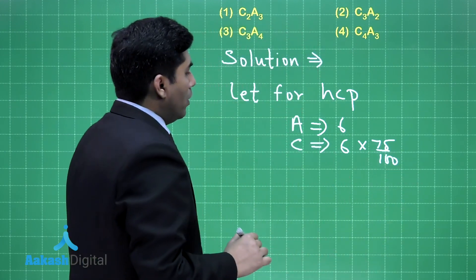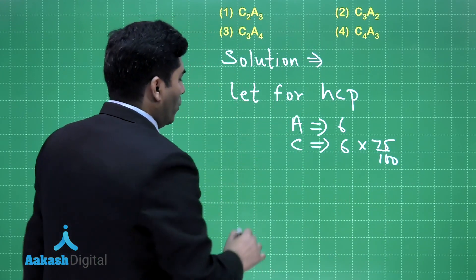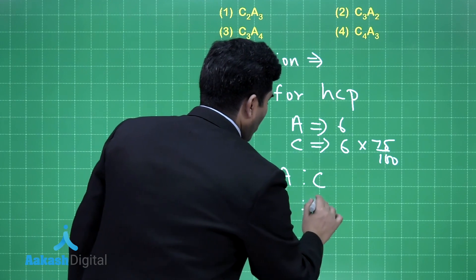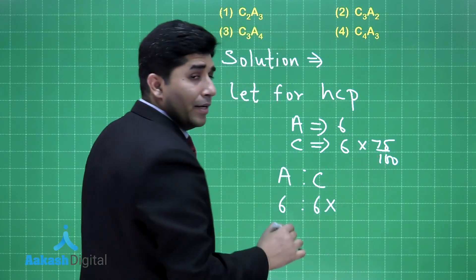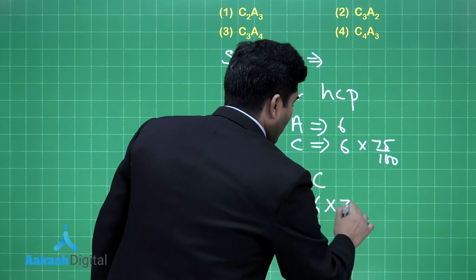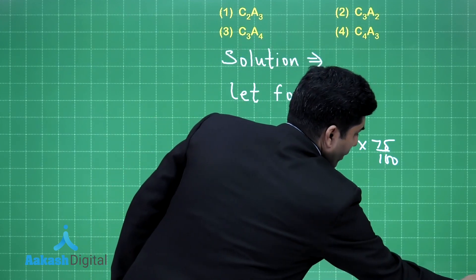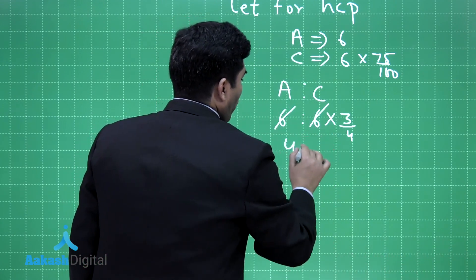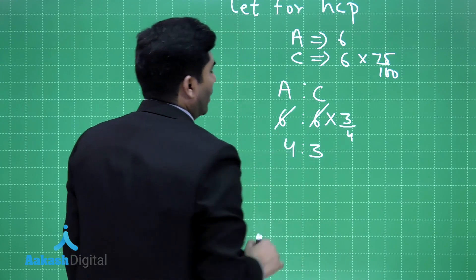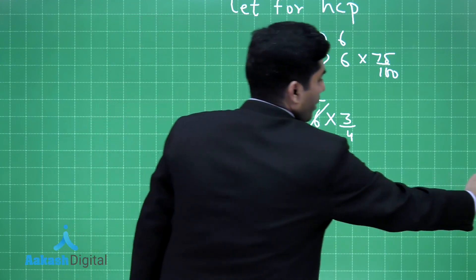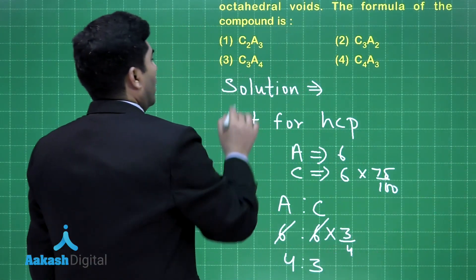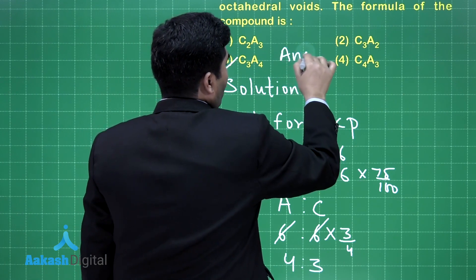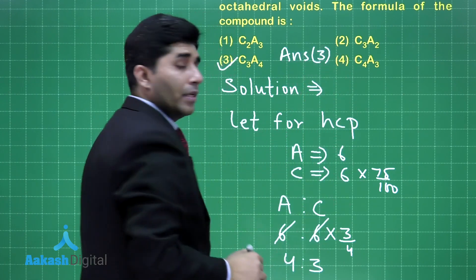The ratio of A to C is 6 to 6 multiplied by 75/100, which equals 6 to 4.5, or simplified 4 to 3. The 6 and 6 cancel out, giving us 4 is to 3. So A is 4 and C is 3. The final answer is option number 3.